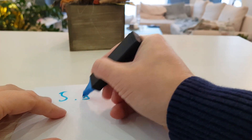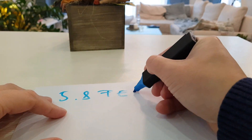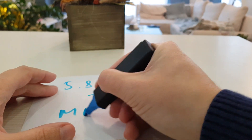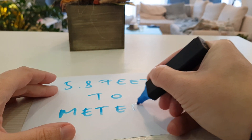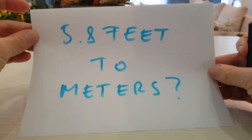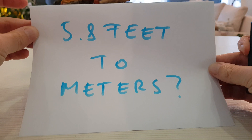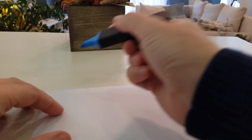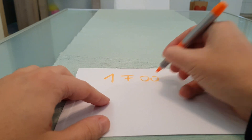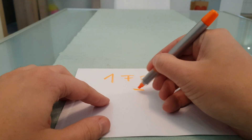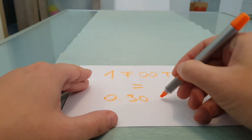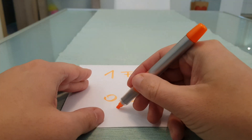In this video I will show you how to convert 5.8 feet to meters. Here is the formula: 1 foot equals 0.3048 meters.